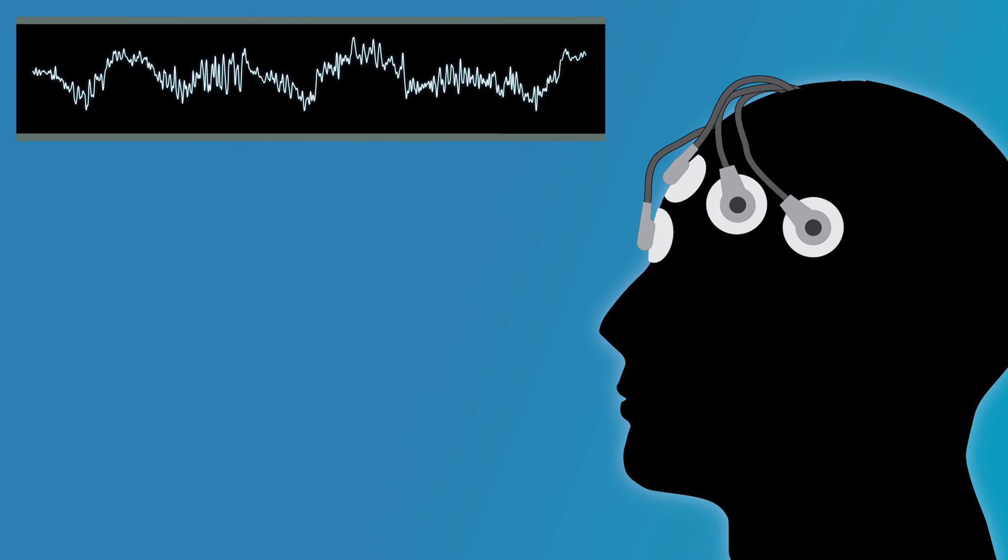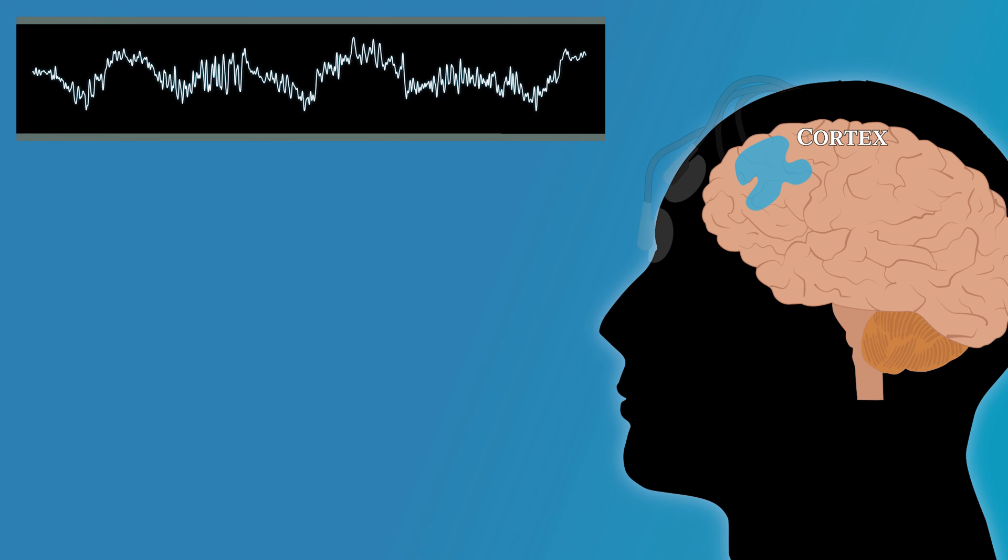The EEG is primarily thought of as a measure of cortical activity. However, cortical and subcortical structures, such as the thalamus, are richly interconnected. As such, EEG patterns can reflect the coordinated action among cortical and subcortical structures and therefore could help infer the state of subcortical areas as well.